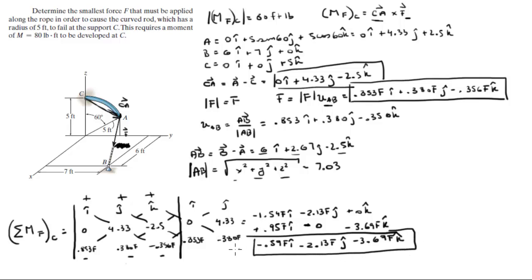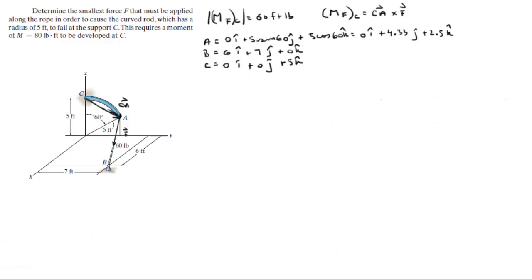So this is the moment that F creates about C. But we're looking for the force that will make it fail. So let me get some more room. So I'm going to rewrite it to have it on screen. The moment that F creates about C, we just found this, so I'm just rewriting it here. It came out to be negative 0.59 F in the i, minus 2.13 F in the j, minus 3.69 F in the k. So this is the moment we just found. But we're not given a Cartesian vector form, we're given a magnitude. And how do you find the magnitude of a vector?